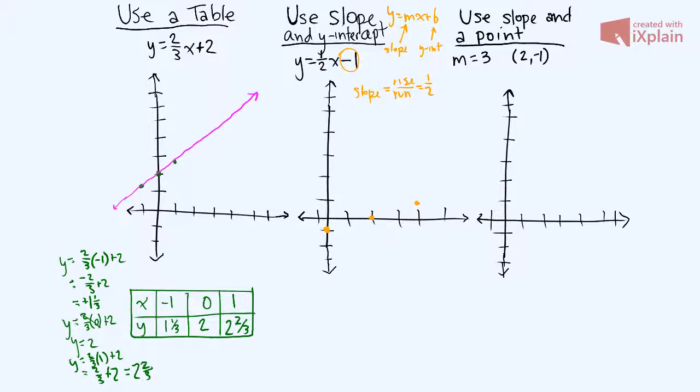And we could continue that pattern on if we wanted to. But what we notice is that we have our line right there. And we put arrows on the end because it's infinite. It goes on forever in both directions.